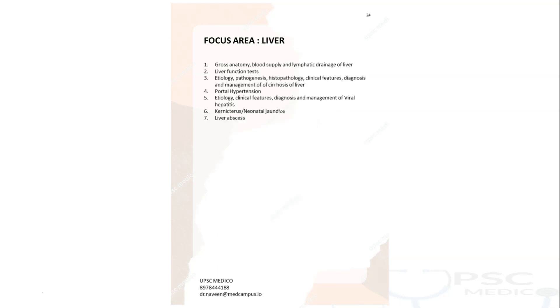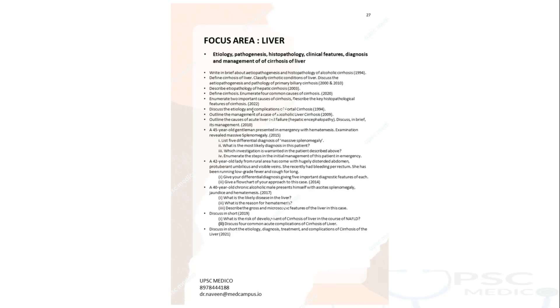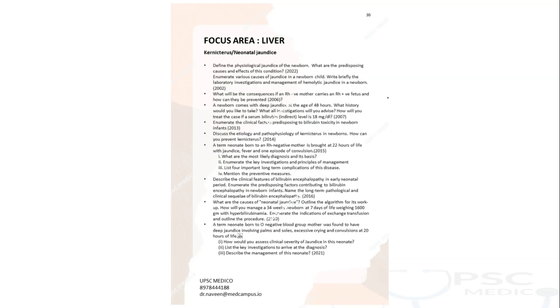Liver, heart, and kidney are major subjects. Liver comes in anatomy, biochemistry, pathology, and general medicine — cirrhosis of liver. Liver also comes in surgery with portal hypertension, viral hepatitis, and pediatrics with kernicterus and neonatal jaundice. Surgical conditions include liver abscess, entamoeba histolytica, and amoebic liver abscess. All PYQs are segregated at a single place so you have a clear idea how to approach liver.